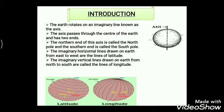The imaginary horizontal lines drawn on earth from east to west are the lines of latitudes. These imaginary lines run east to west and divide the earth's surface into two halves — the northern hemisphere and the southern hemisphere. All these lines run parallel to each other, so this is the reason why they are also called the parallels of latitude, or simply parallels.